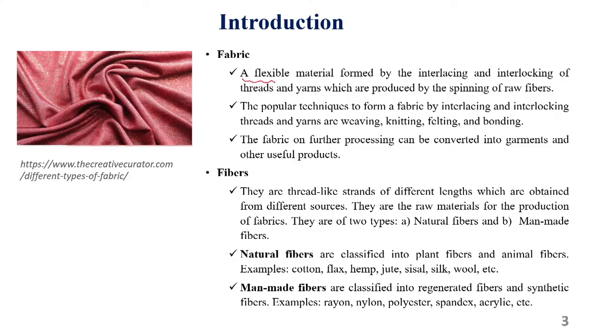We all use fabrics or garments in our daily lives. Moreover, we also use fabrics for a variety of other purposes such as protection, household applications, and industrial applications. Fabric is considered a flexible material which is formed by interlacing and interlocking of threads and yarns, which are produced by spinning of raw fibers. Raw fibers may be cotton, silk, yarn, or even agricultural produce such as banana. By using these fibers and interlacing and interlocking, we produce the fabric.